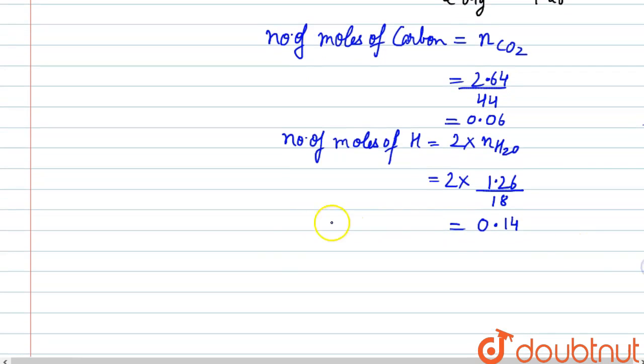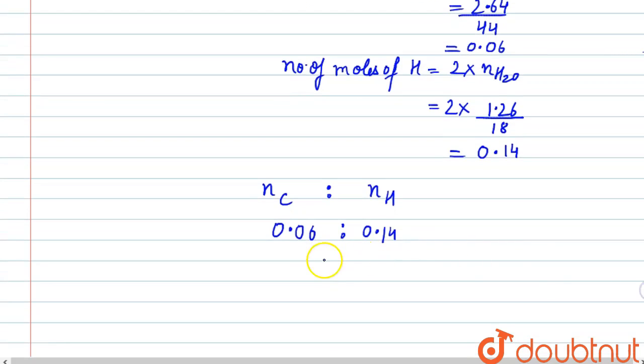Now we will calculate their ratio. The ratio of number of moles of carbon to number of moles of hydrogen will be 0.06 : 0.14. Their simplest ratio will be 3 : 7.